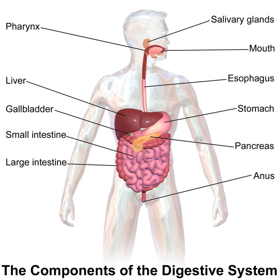The tongue is skeletal muscle on the floor of the mouth that manipulates food for chewing and swallowing. It is sensitive and kept moist by saliva. The underside of the tongue is covered with a smooth mucous membrane. The tongue also has a touch sense for locating and positioning food particles that require further chewing, and is utilized to roll food particles into a bolus before being transported down the esophagus through peristalsis. The sublingual region is an ideal location for introducing certain medications to the body, taking advantage of the highly vascular quality of the oral cavity for speedy application into the cardiovascular system, bypassing the gastrointestinal tract.